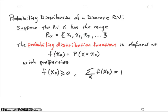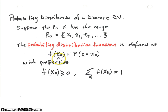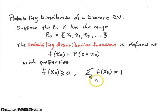Now let's define the probability distribution function. From now on, we're going to be dealing with discrete random variables — mostly finite, but this will also apply to countably infinite random variables. Suppose our random variable can take on values x₁, x₂, x₃, and so on. We define the probability distribution function f, where f(xₖ) equals the probability that the random variable equals xₖ. The properties of this function are that it must be greater than or equal to 0, and if we sum all values, we get 1.